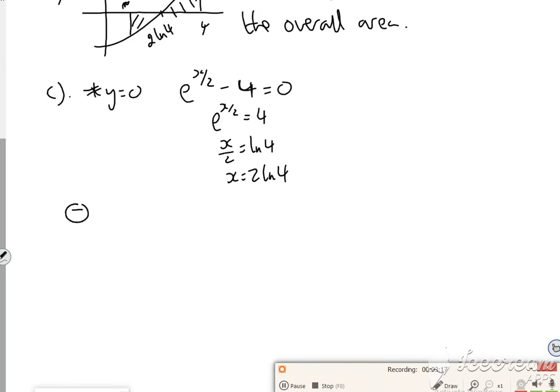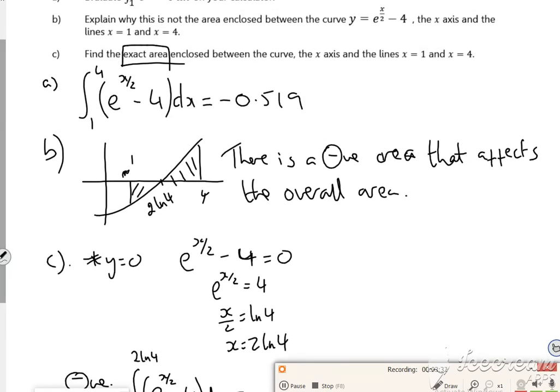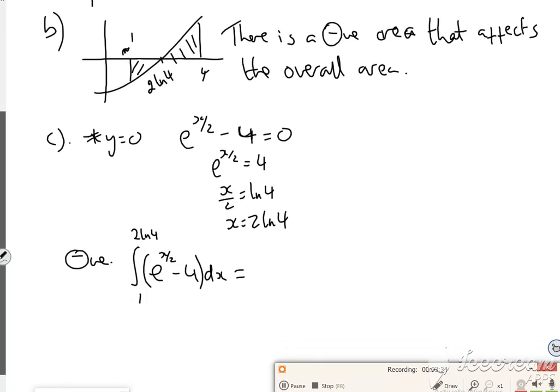So we've got the negative area is the integral from 1 to 2 log 4 of e to the x over 2 minus 4 dx. Now if I do this in my calculator, it will give me a decimal value. And it says exact, so I've got to show the working. I've got to do the working, unfortunately.